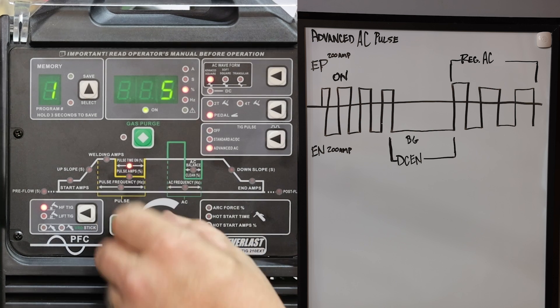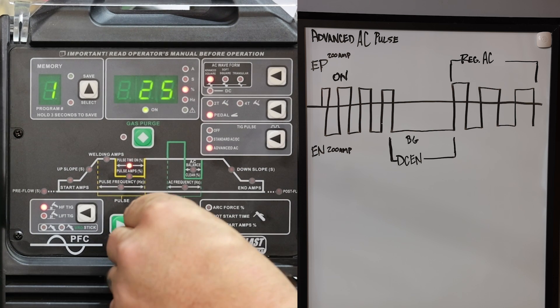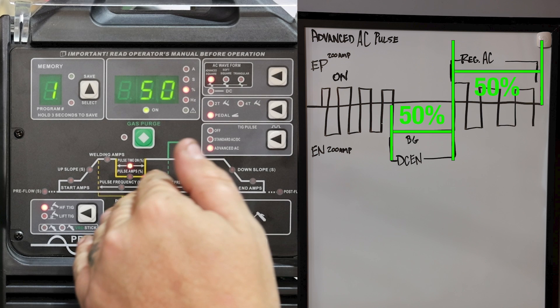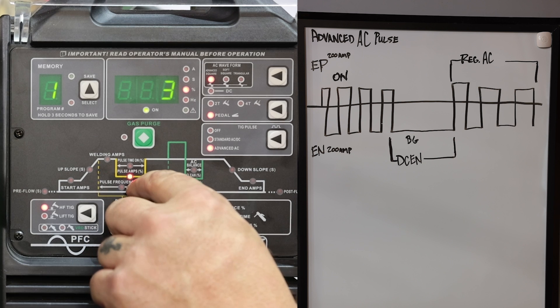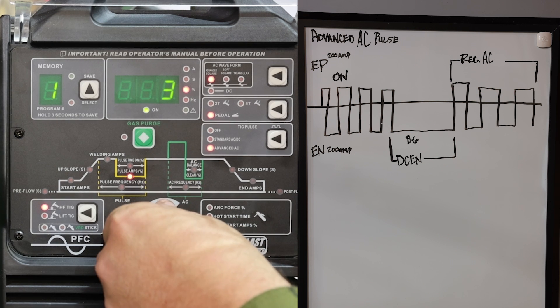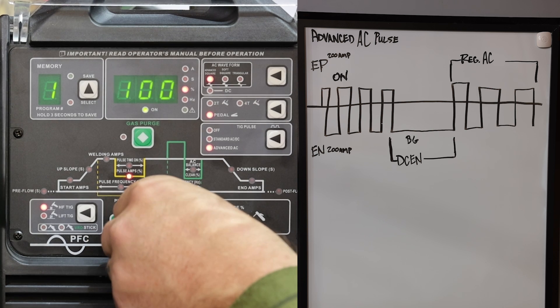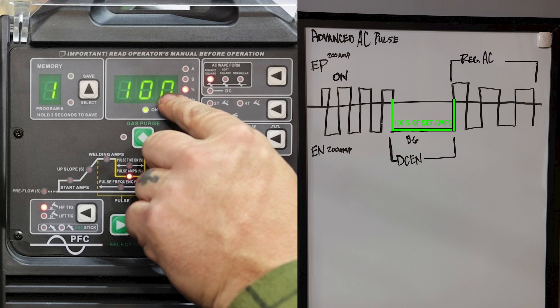So our pulse time on, that is a percentage. So we want a 50/50 balance. So we basically want our on time and our background time to be the exact same. So we set it to 50%. Now we go to the pulse amps percentage. Now this is a percentage of our on time amperage. So we're going to go all the way to a hundred percent. This represents our DC electrode negative side of the pulse, which is where we get all of our penetration from. So we want maximum penetration. So we set it to 100%.